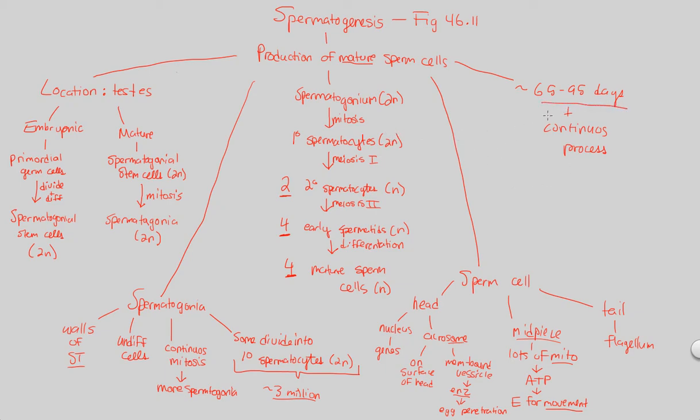65 to 95 days, for a fully mature sperm cell to go from its initial spermatogonium state all the way into the mature sperm cell state that we've highlighted here.